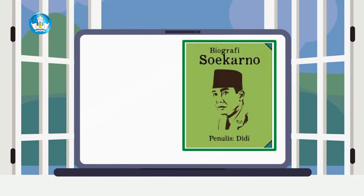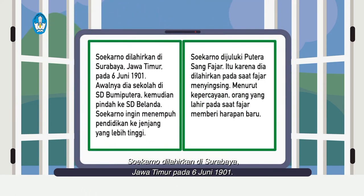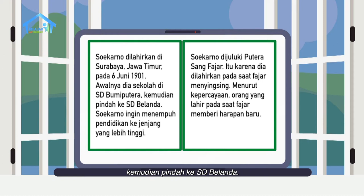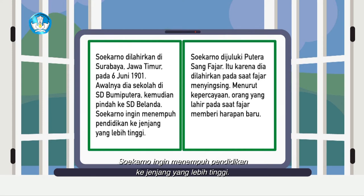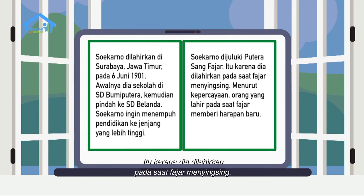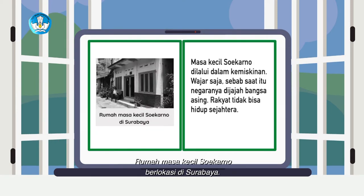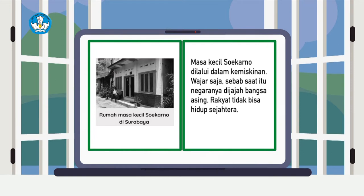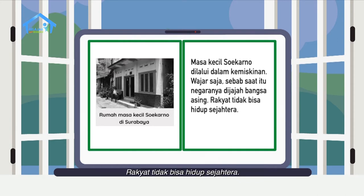Biografi Soekarno. Soekarno dilahirkan di Surabaya, Jawa Timur pada 6 Juni 1901. Awalnya dia sekolah di SD Bumi Putra, kemudian pindah ke SD Belanda. Soekarno ingin menempuh pendidikan ke jenjang yang lebih tinggi. Soekarno dijuluki Putra Sang Fajar karena dia dilahirkan pada saat fajar menyingsing. Menurut kepercayaan, orang yang lahir pada saat fajar memberi harapan baru. Rumah masa kecil Soekarno berlokasi di Surabaya, dan masa kecilnya dilalui dalam kemiskinan. Wajar saja, sebab saat itu negaranya dijajah bangsa asing — rakyat tidak bisa hidup sejahtera.